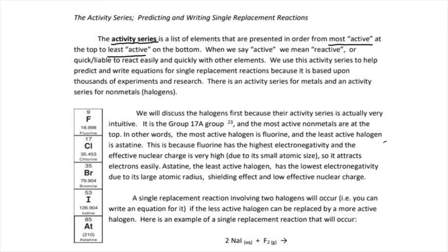So there are two sets of activity series. One is for metals, the other one is for halogens. We're going to tackle the halogen one first because it's much easier and is pretty intuitive to understand. The activity series for halogens is the group 17 group from top to bottom. The most active is at the top; the least reactive is at the bottom.